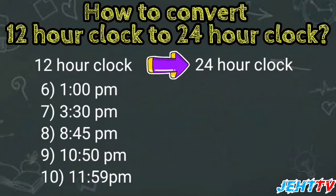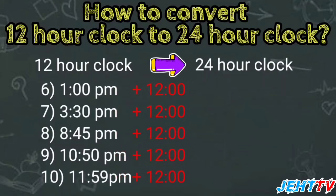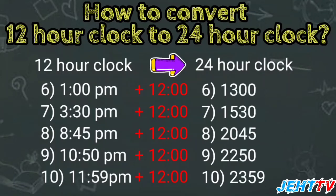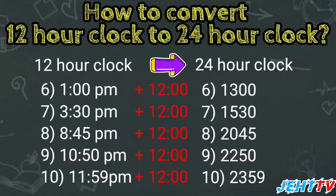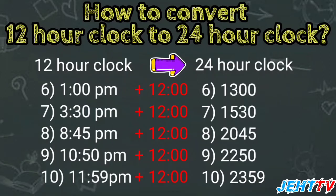For the next five questions, you need to remember that starting from 1 PM, we need to add 12. So for number 6, 1 PM: 1 plus 12 equals 13, so we write 1300. For number 7, 3:30 PM: 3 plus 12 equals 15, so the answer is 1530. For number 8, 8:45 PM: 8 plus 12 equals 20, so the answer is 2045. For number 9, 10:50 PM: 10 plus 12 equals 22, so the answer is 2250. And for number 10, 11:59 PM: 11 plus 12 equals 23, so the answer is 2359.